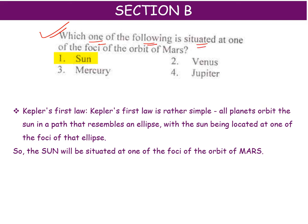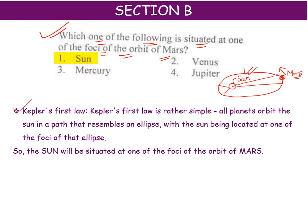The question asks which one of the following is situated at one of the foci of the orbit of Mars. We studied this in Kepler's First Law: every planet orbits with the Sun at one focus. If Mars is moving in an ellipse, the Sun is at one of its foci. Kepler's First Law tells us all planets orbit the Sun in an elliptical path with the Sun located at one of the foci. So the answer is the Sun — a very simple question.